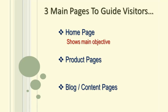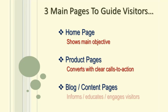The homepage will show the main objective of your website. The product pages must be specific about the items you are selling, with clear calls to action. The blog is the reservoir where you build up content relevant to your products, and the purpose here is threefold: to inform, educate, and engage the visitors who come directly to these pages.